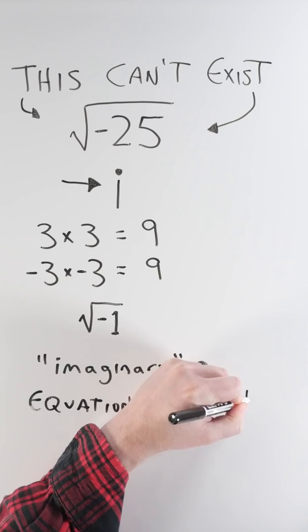So the square root of negative 25, that's just 5i. Now you know that. Okay, bye.